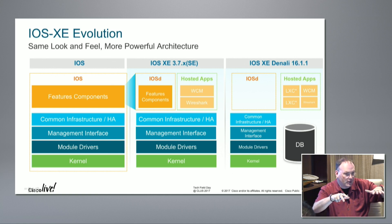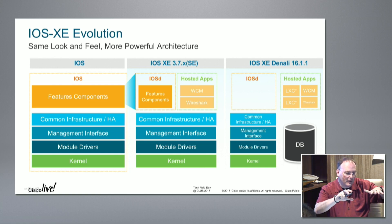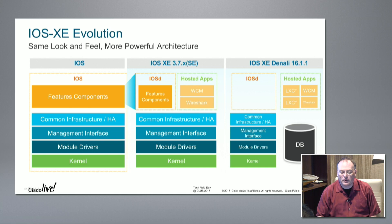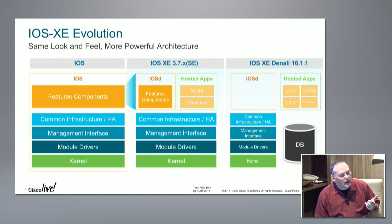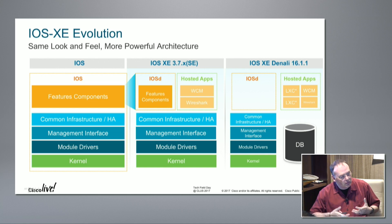There are a lot of good applications, especially around security, where you want to involve that containerized function as close to the source of the issue as possible. When Muhammad comes up and talks about CAT 9K, we dramatically oversized the control plane — going to a multi-core Intel CPU with more memory than needed for spanning tree and protocols — because we want to be able to run containerized apps on the device.